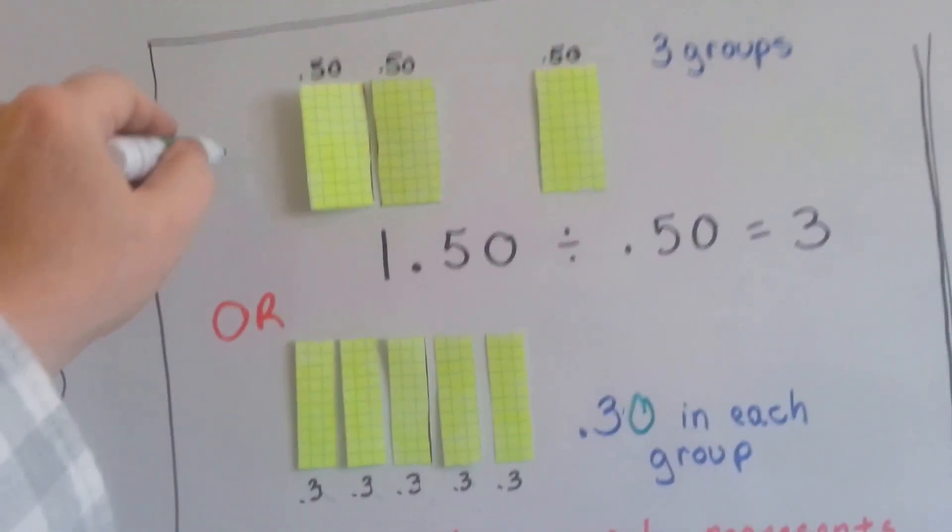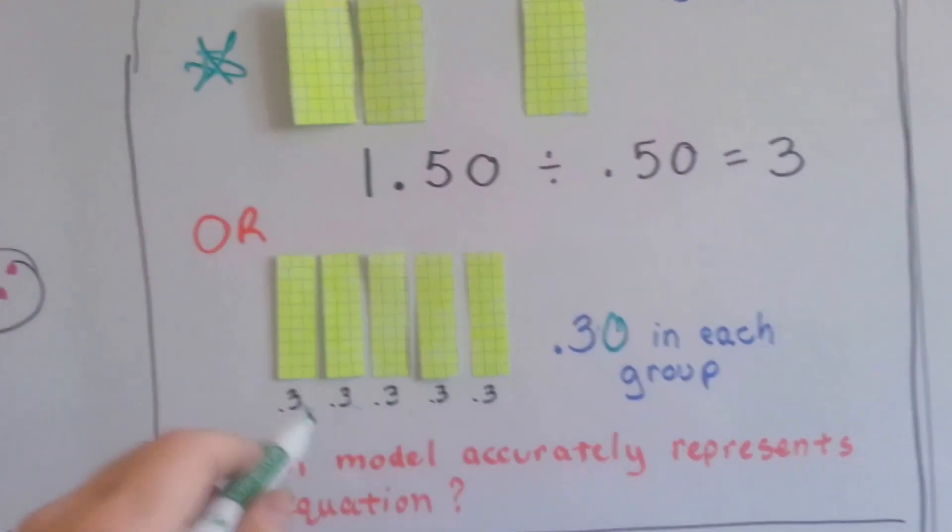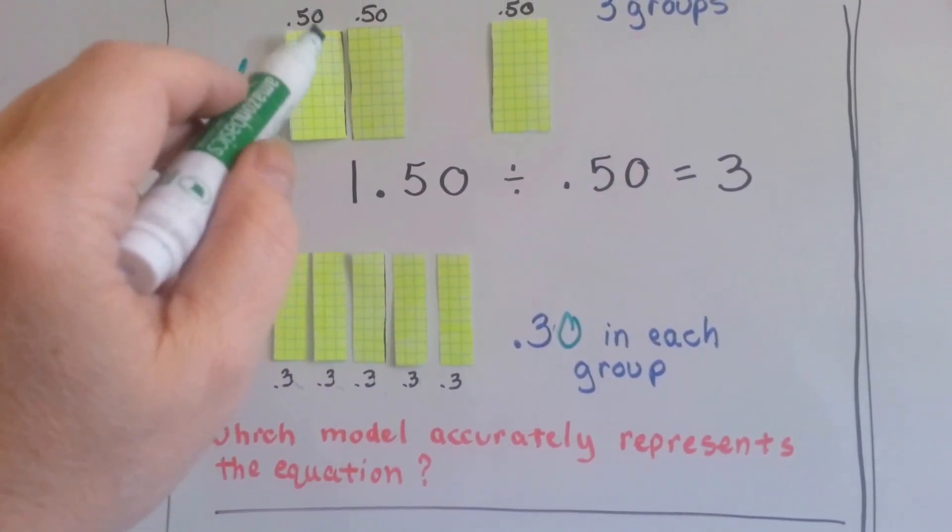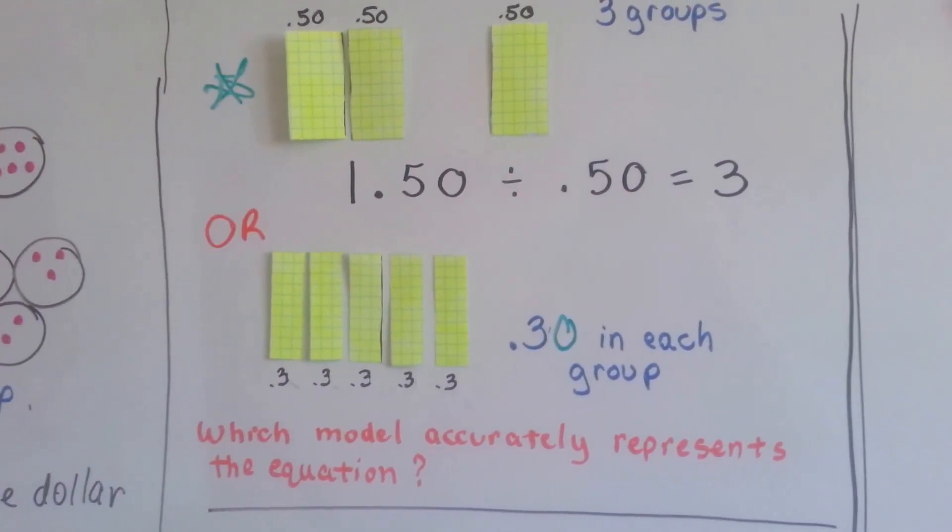So if you said this one, you're right, because this one is not 50 hundredths, is it? This one would accurately describe. These models would accurately describe the equation.